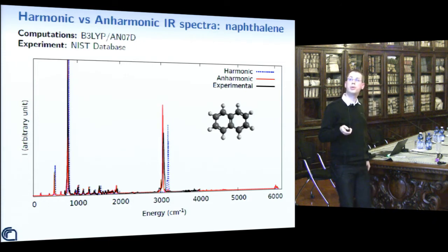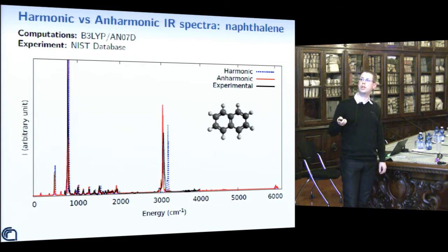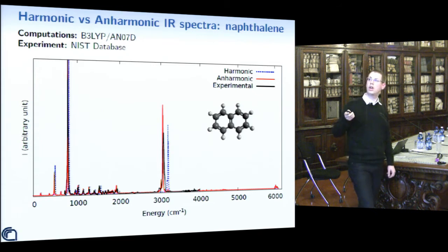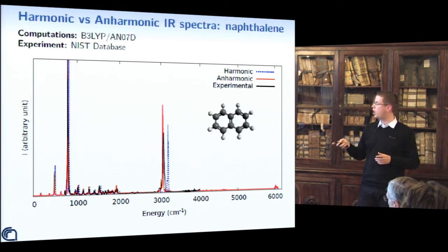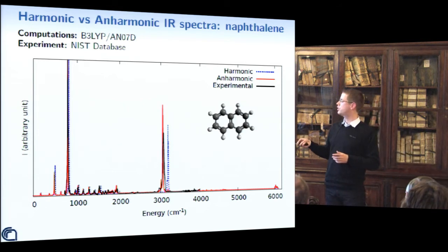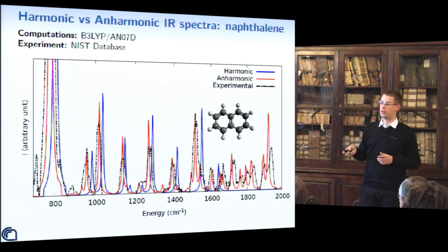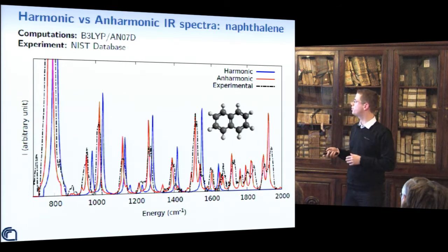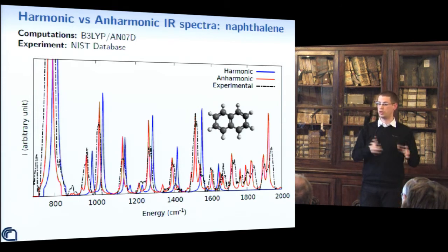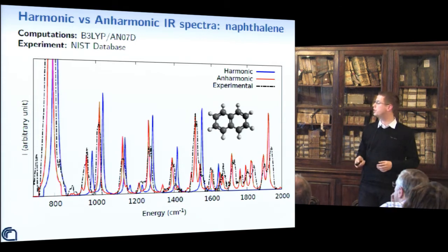Experimental data were taken from the NIST database. On this infrared spectrum we can see that already the anharmonic approach provides better band positions. It seems at first that computing only anharmonic vibrational energies is enough. However, if we focus on the region between 800 and 2000 wavenumbers, the harmonic spectrum is missing several bands which are due to overtones and combination bands, and the only way to reproduce them is to have both anharmonic vibrational energies and anharmonic intensities.